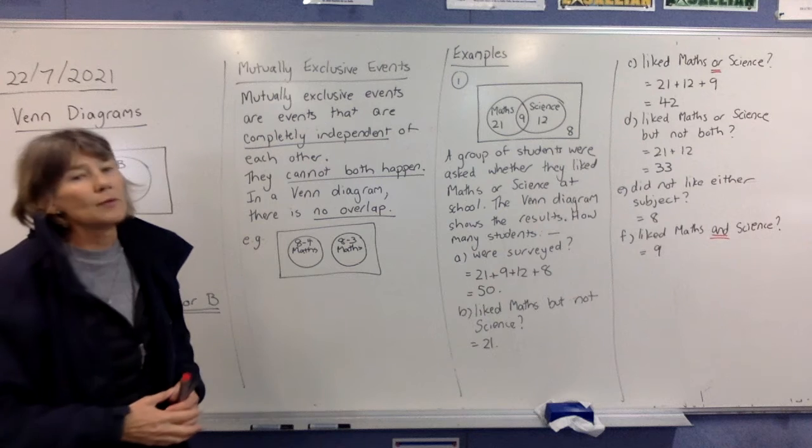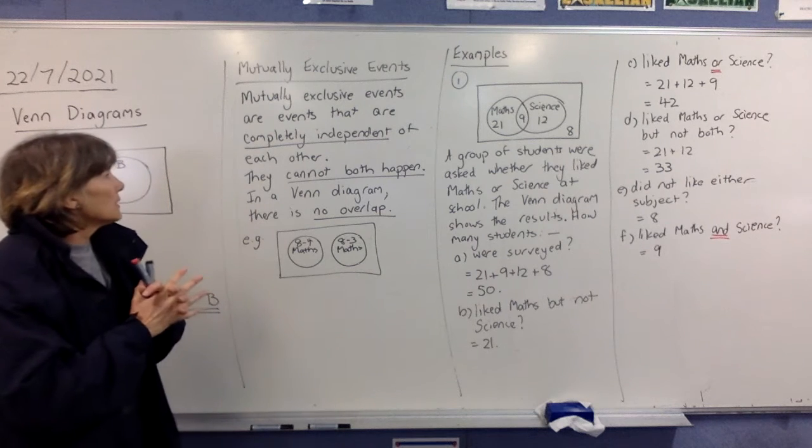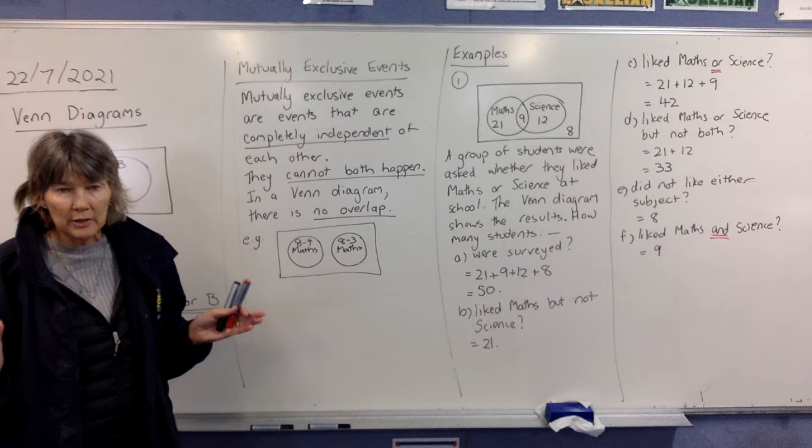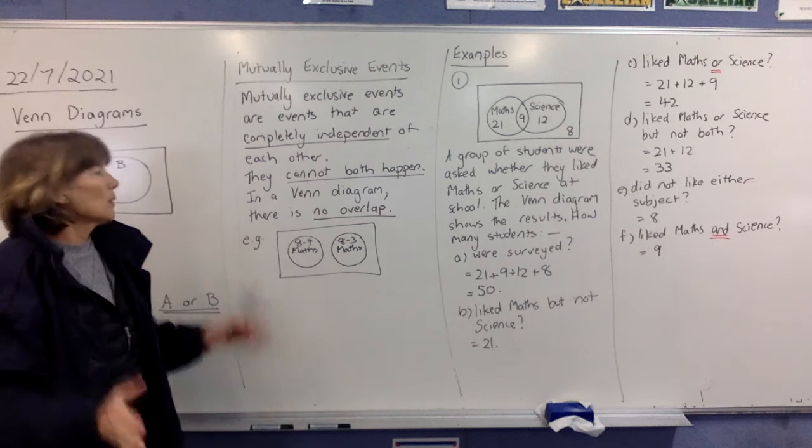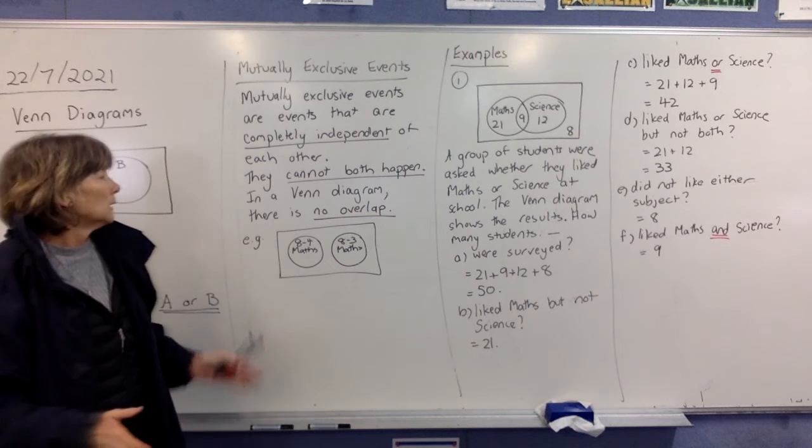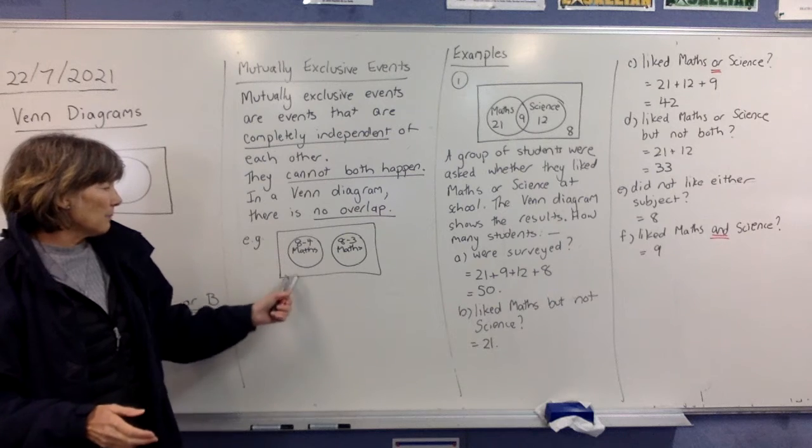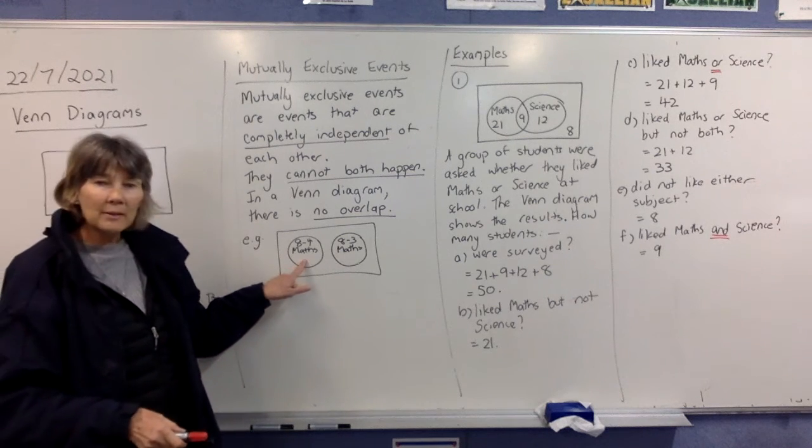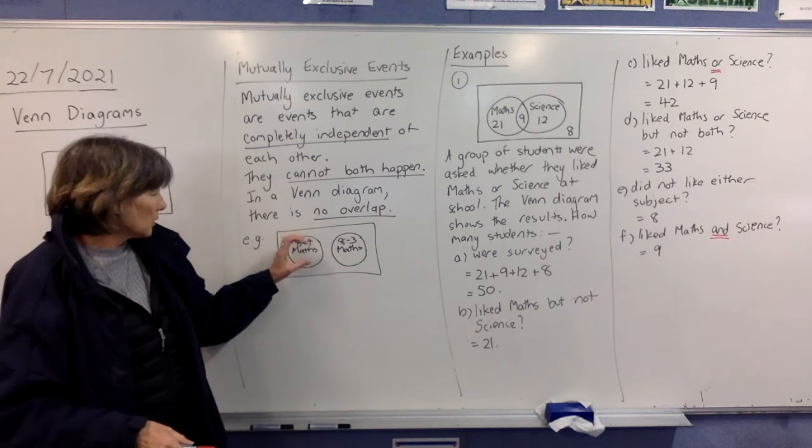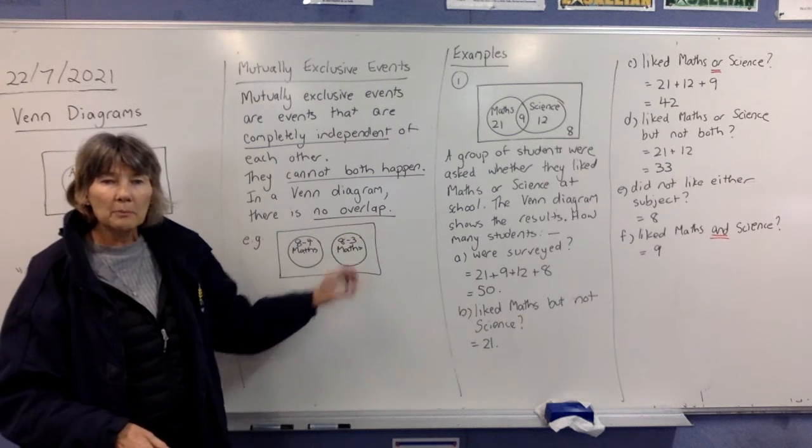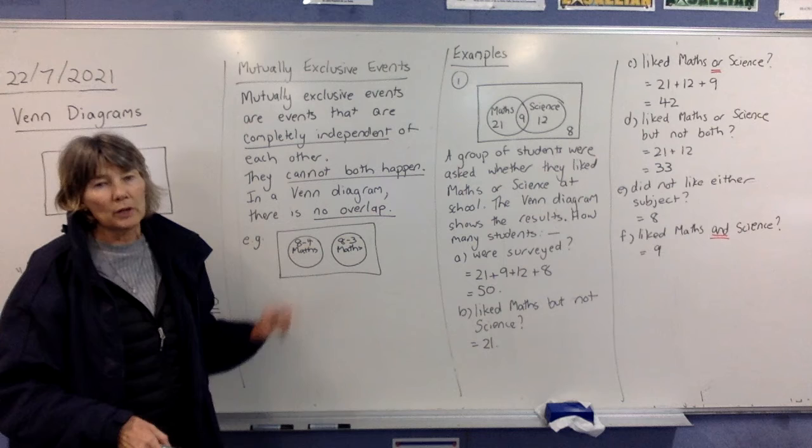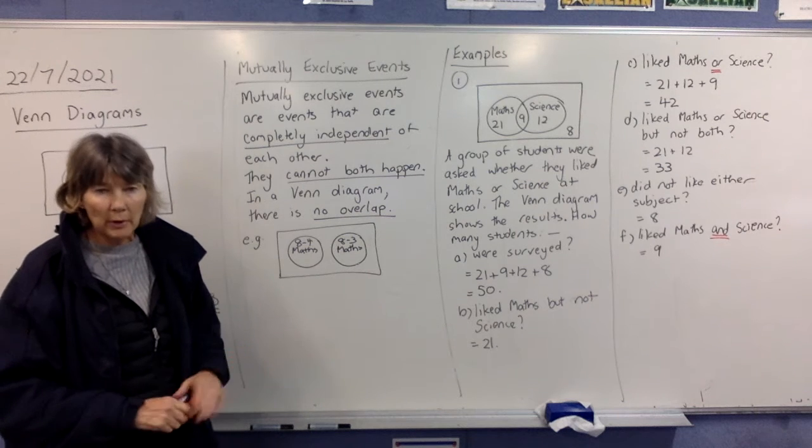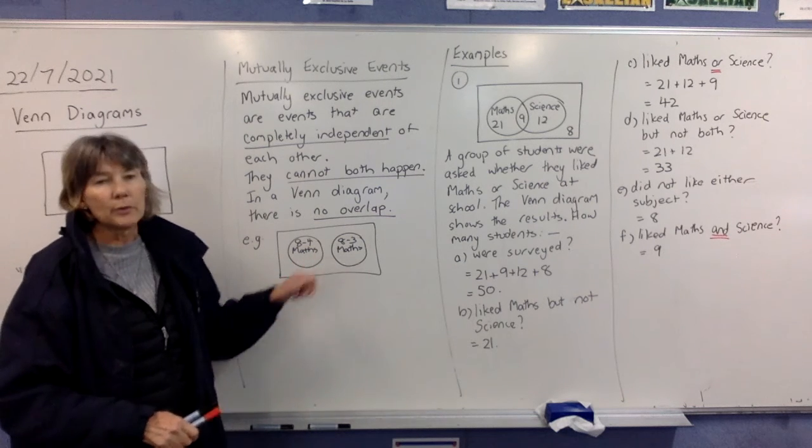Mutually exclusive events. Mutually exclusive events are events that are completely independent of each other. They can't both happen together. And in a Venn diagram, they would look like that. So I've given you an example here for 8-4 maths and 8-3 maths. That's a group of people. You can't be in both classes. So there is no overlap. There isn't anybody that's in both of these groups.